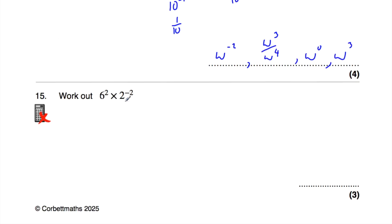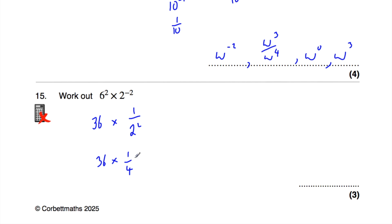Question 15: work out 6 squared multiplied by 2 to the power of negative 2. 6 squared is 36. 2 to the power of negative 2 is 1 over 4. So we have 36 times 1 over 4 — that's a quarter of 36, which is 9. So the answer is 9.